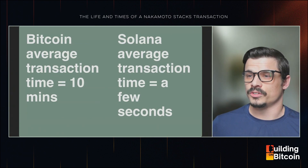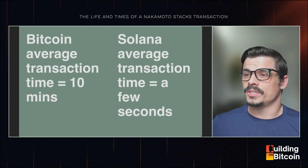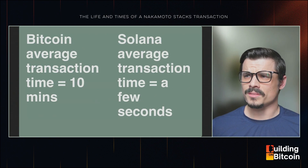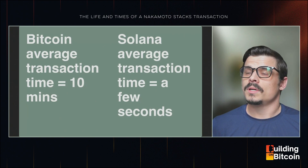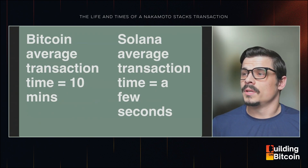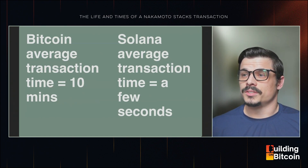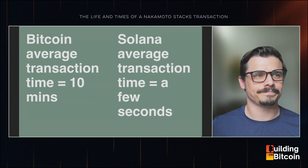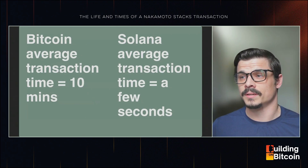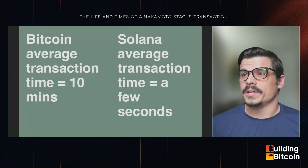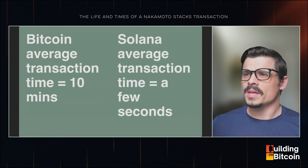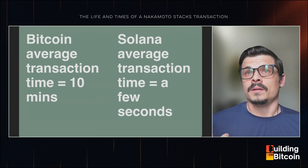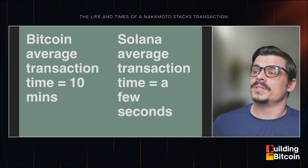This is the difference between the user experience of a Bitcoin transaction and a Solana transaction: 10 minutes versus a few seconds. The hardware requirements to run a Bitcoin node are very low and the script that runs transactions is very simple, which means Bitcoin can be highly decentralized and secure — but slow. Solana went the other direction with higher node requirements but transactions settle very quickly.